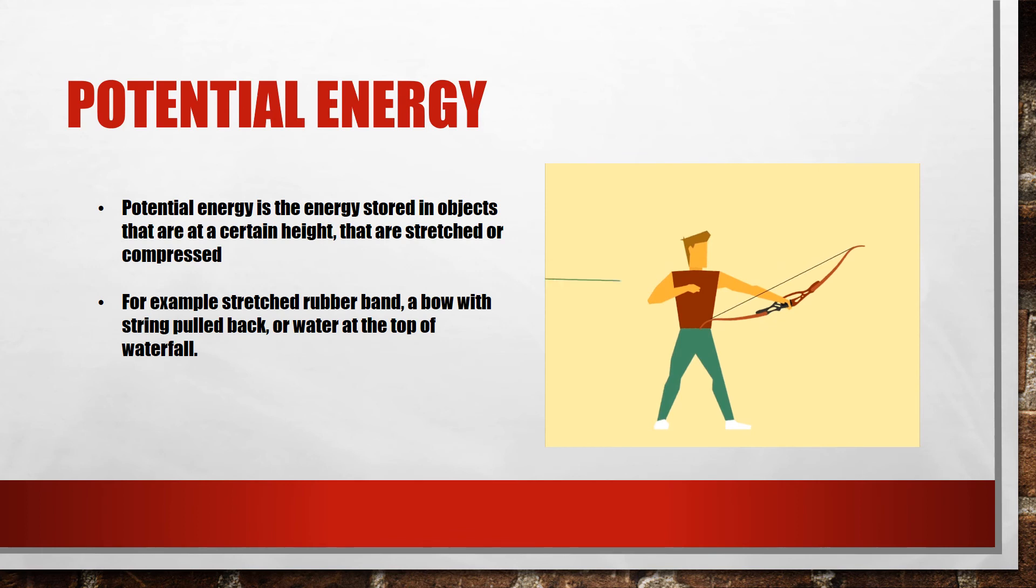Potential energy is the energy stored in objects that are at a certain height, that are stretched or compressed. For example, a stretched rubber band, a bow with string pulled back, or water at the top of a waterfall.